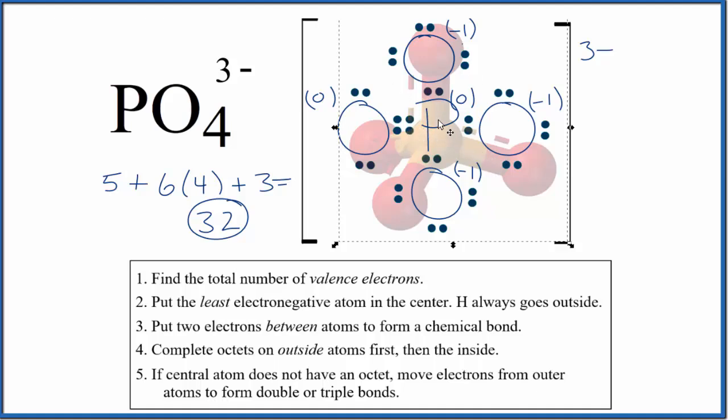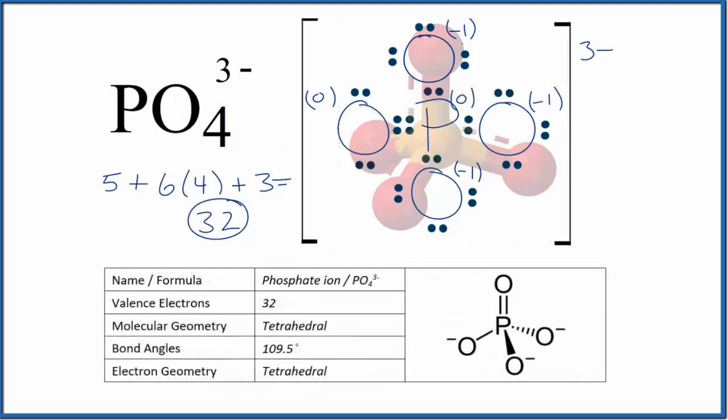But note, it could have been on any of these oxygens. Note that the molecular geometry for the phosphate ion is tetrahedral.